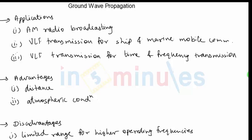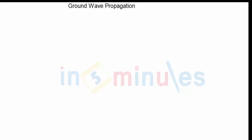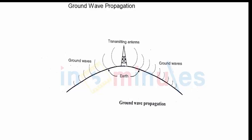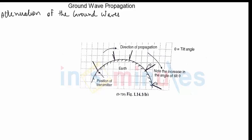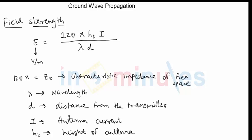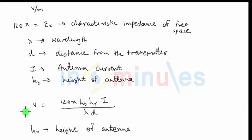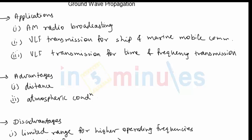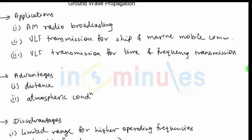That covers ground wave propagation. For exam questions, one can first define ground wave propagation with the help of the figure from the first video clip, then discuss the attenuation of ground waves and the various factors that affect it, followed by the field strength formula and the voltage signal received on the receiving antenna. Finally, discuss the applications, advantages, and disadvantages of ground wave propagation.